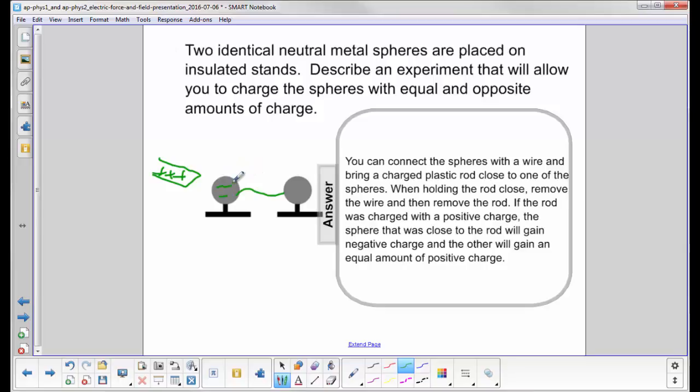Now, since these were neutral, if I have negative three over here, I have to have a plus three over here.